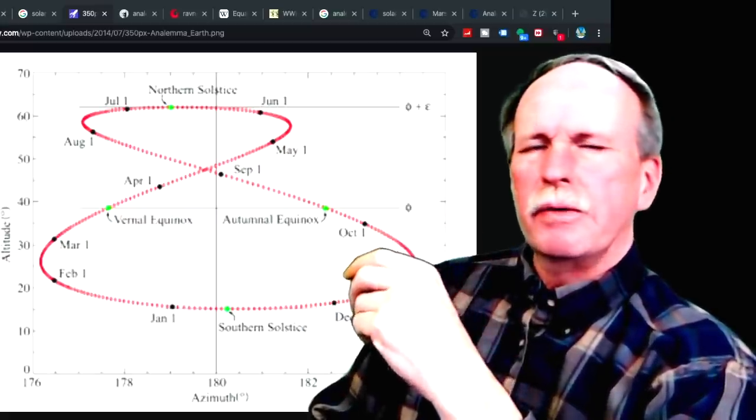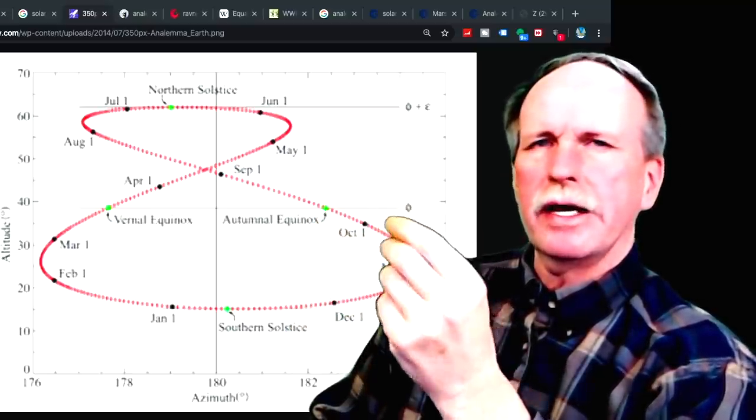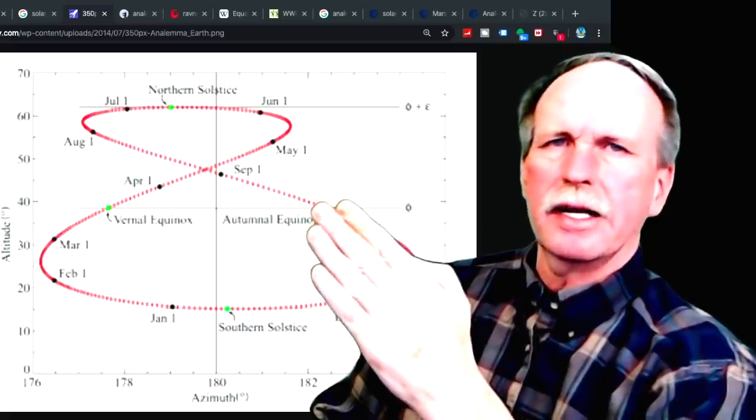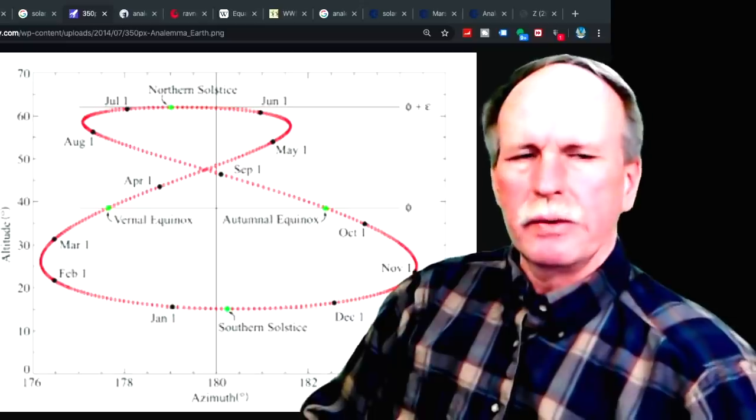So with a solar analemma, we can set our clocks. It will tell us how many minutes we need to add or subtract from our sundial time to give us the correct clock time. Now there's some other things that we can do with it.